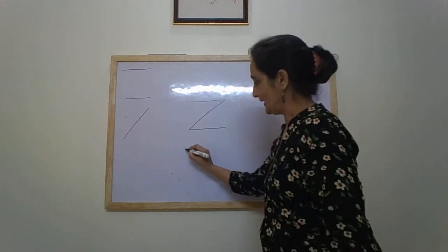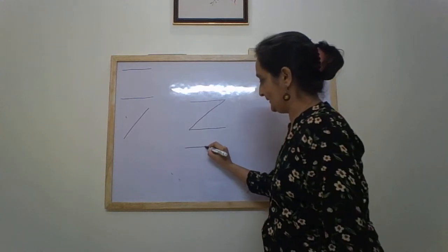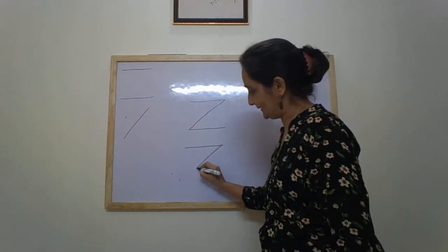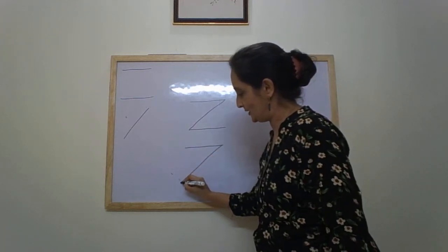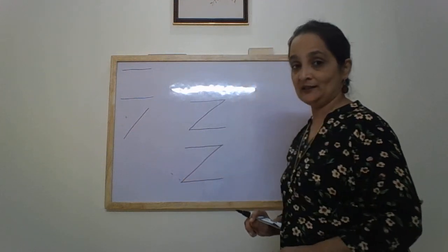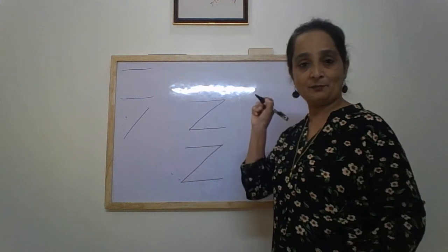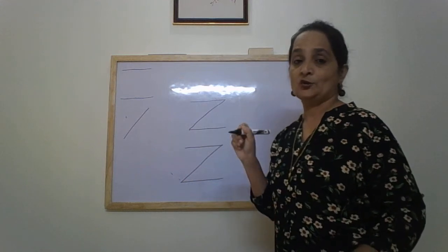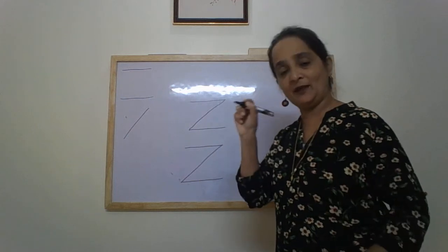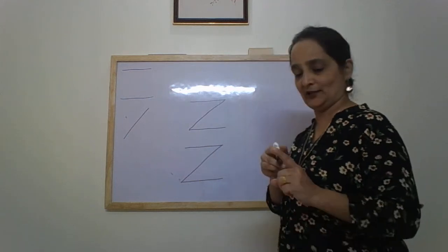One more time. A sleeping line, a slanting line, and one more sleeping line. So children, do you see me picking up my pen? No. So you should also not pick up your hand or your crayon. Keep them down and continue writing.